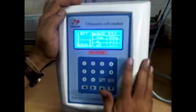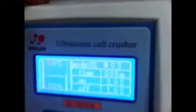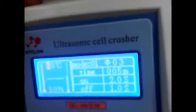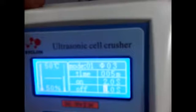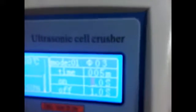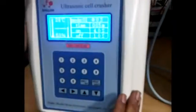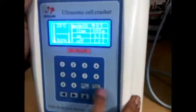So here we have set the parameters at program number one. The run time is 5 minutes, on cycle is 2 seconds. Let us increase to 4 seconds and here I will say set and it will store the parameters. So now we are ready to run and we can say start. Four seconds on, one off, and then again four seconds on.